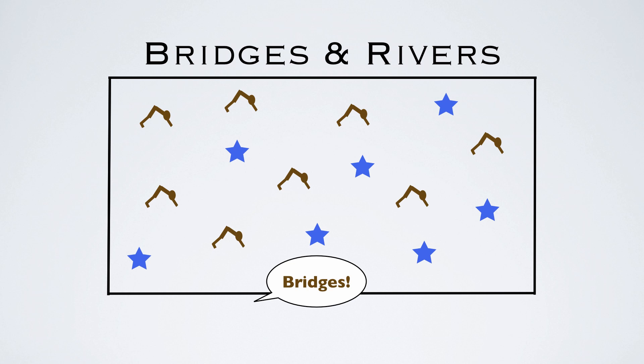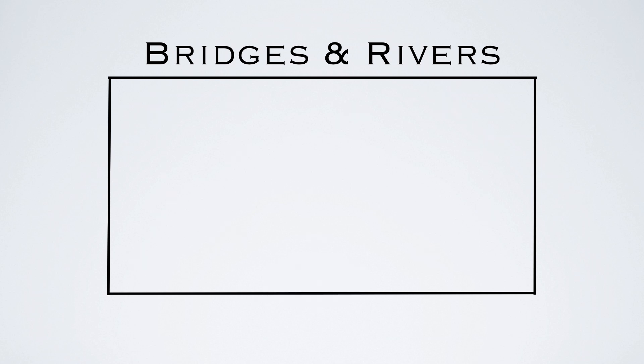They can do this with the butt up in the air, or the reverse bridge, however they want to choose. And then the other students — the rivers — will have to crawl underneath as many bridges as possible until the music starts up again.